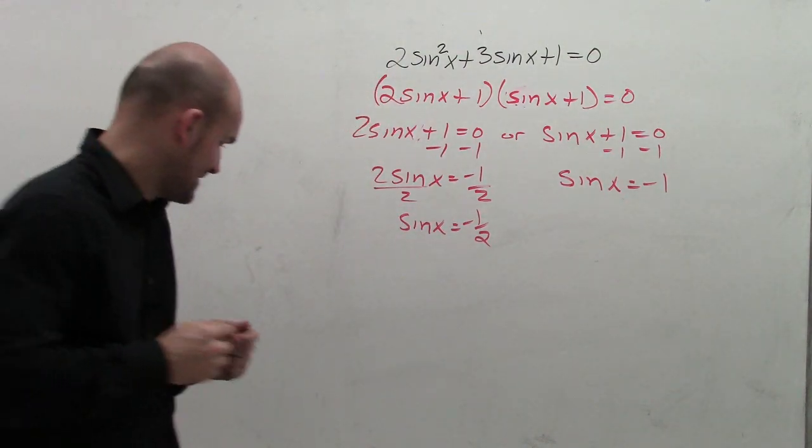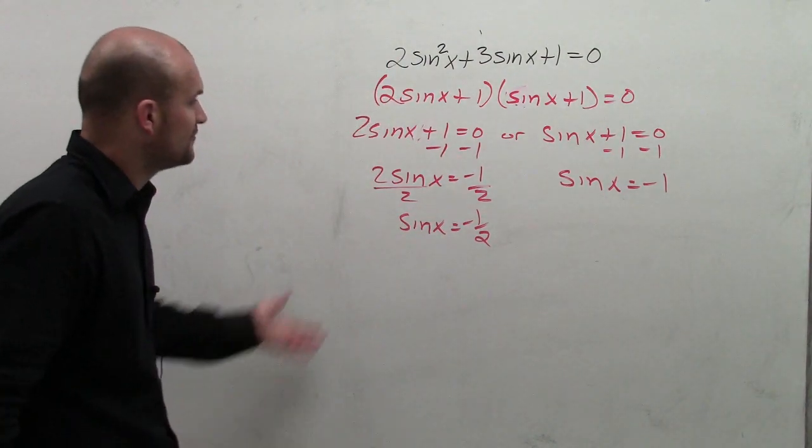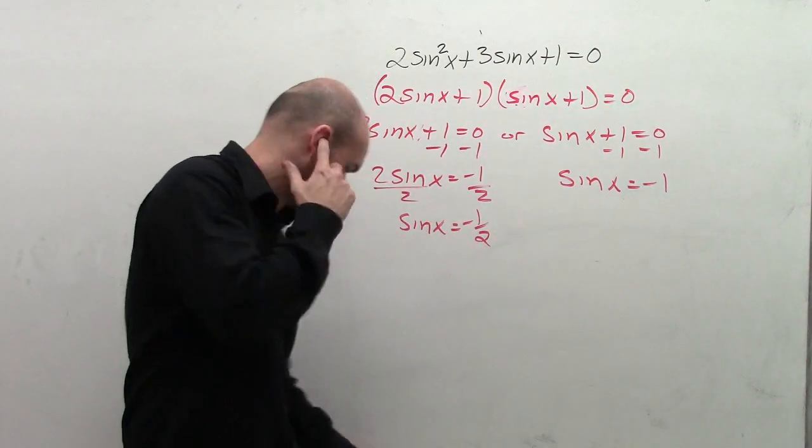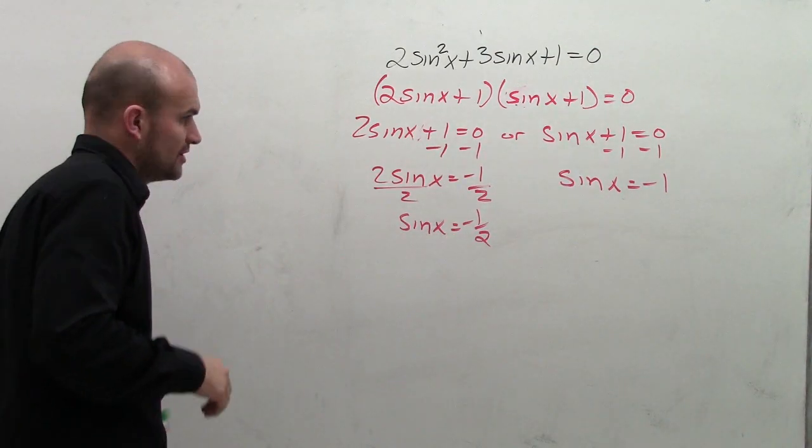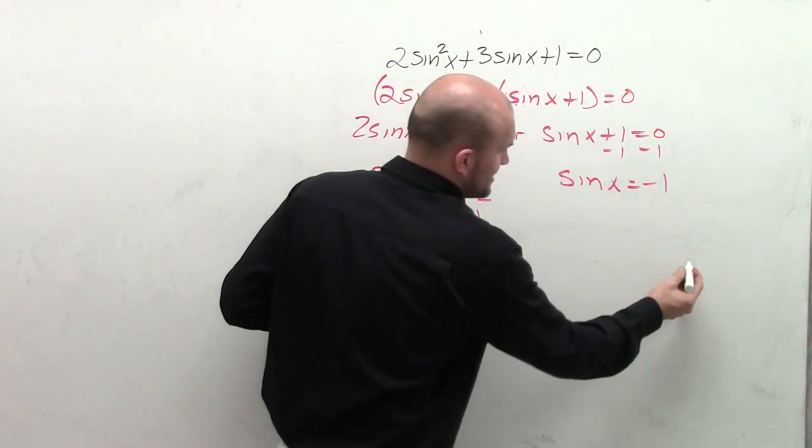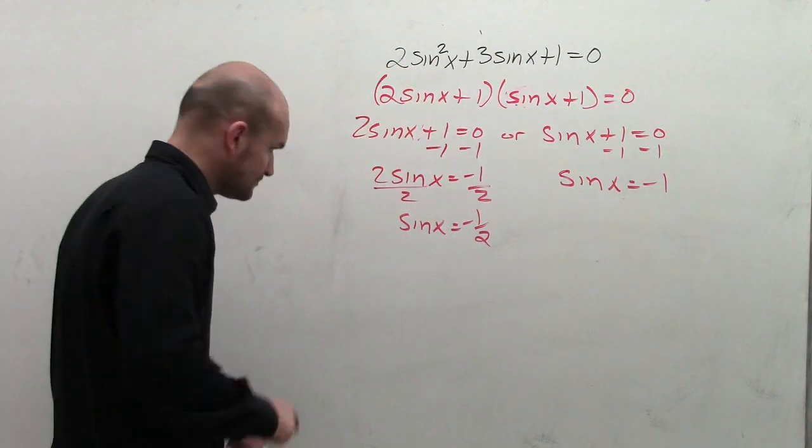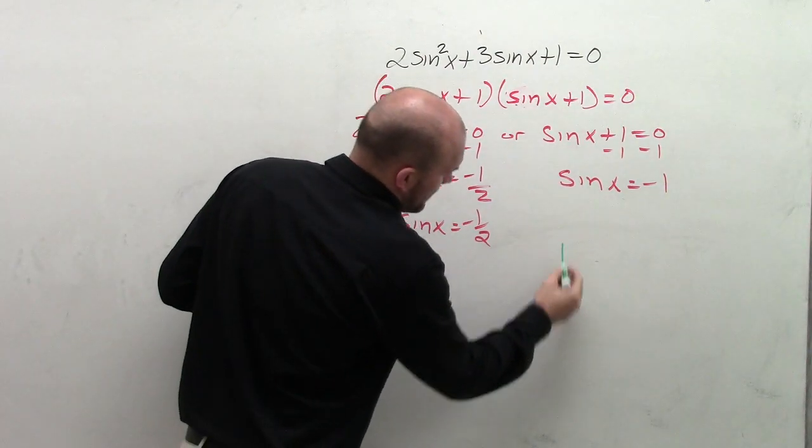So now what I need to do is I need to find the values of my x when I take the sine of it to get these two values. So let's find a different marker here, and to do that, what I can apply is using my unit circle.